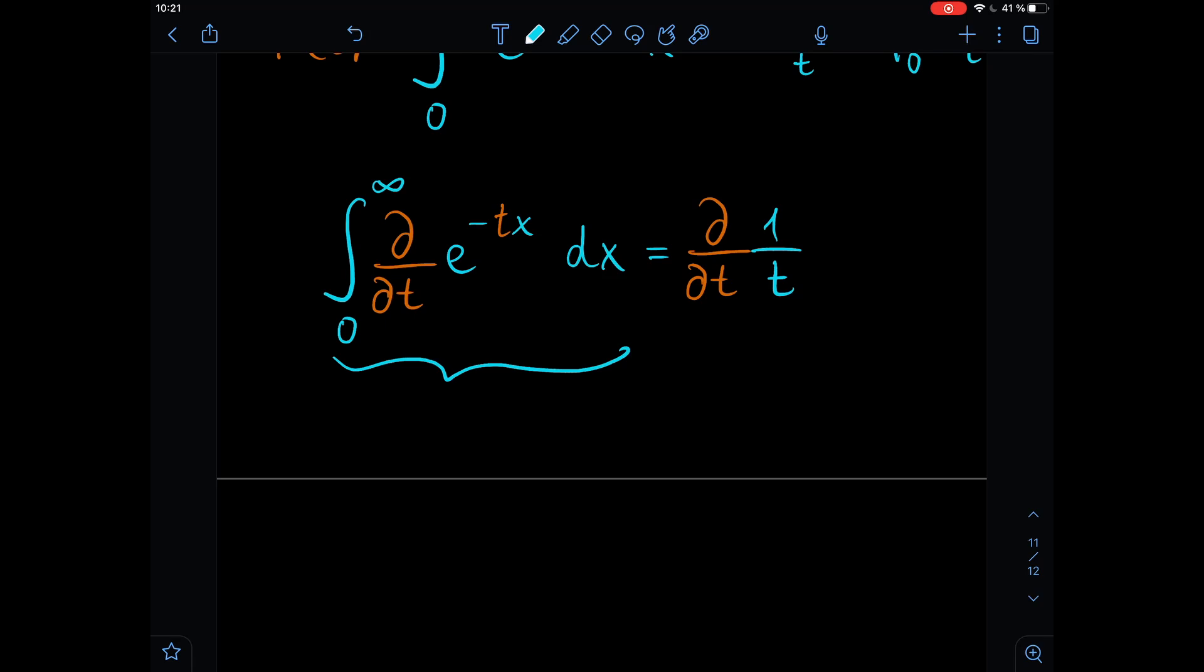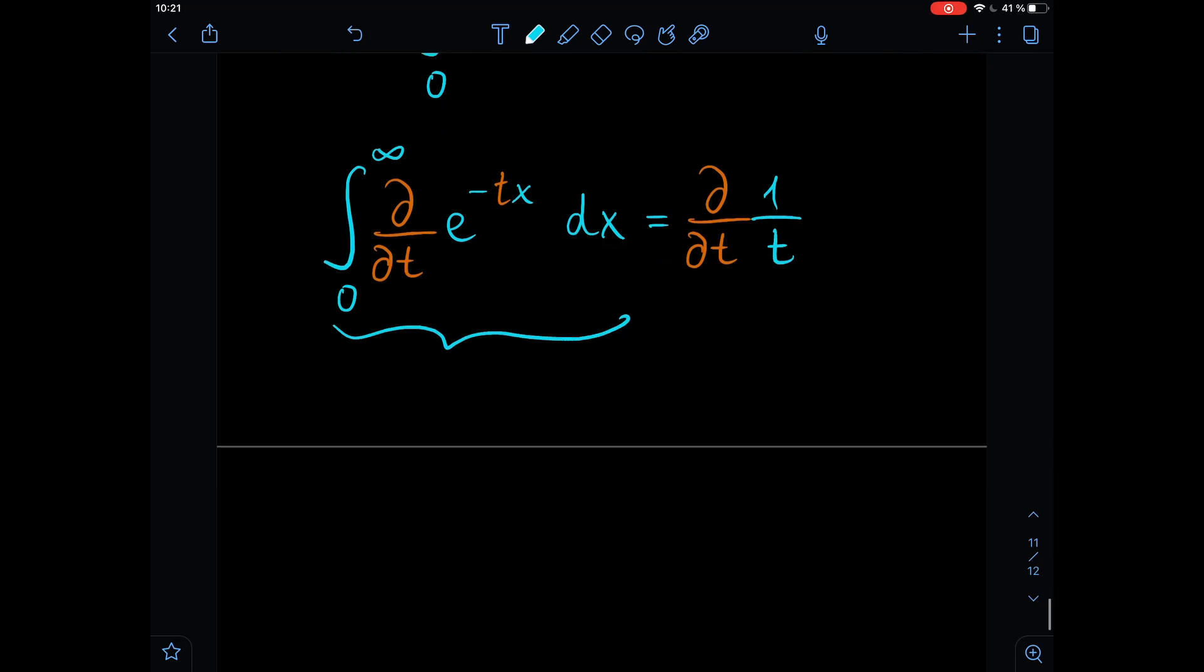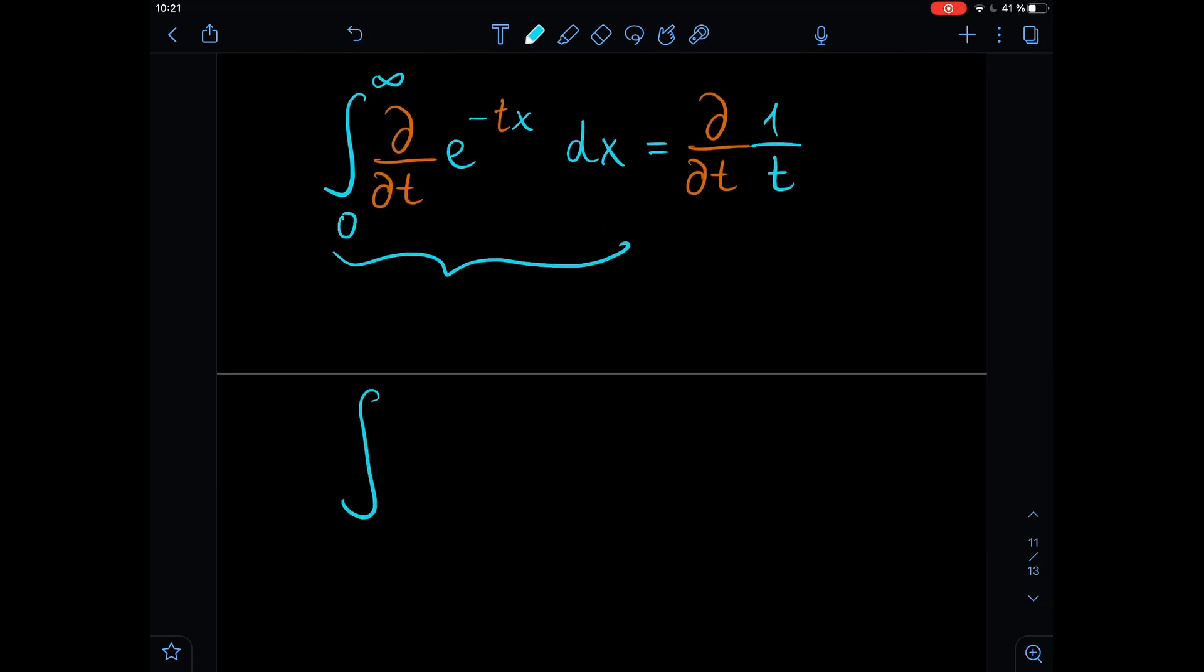So here for the left hand side of the equation we will get, let's scroll down here, so we get the integral from 0 to infinity and then we get minus x times e to the power of minus tx, and on the right hand side, oh I forgot to put the dx, that's a common mistake, on the right hand side we just take the derivative of 1 over t and this is minus 1 over t squared.